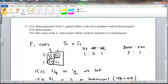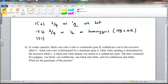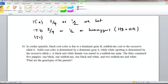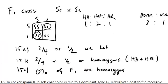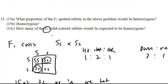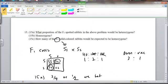15C, the question is how many of the F1 solid colored rabbits would be expected to be homozygous? So that's 0. Because the F1 solid colored rabbits are all heterozygous.